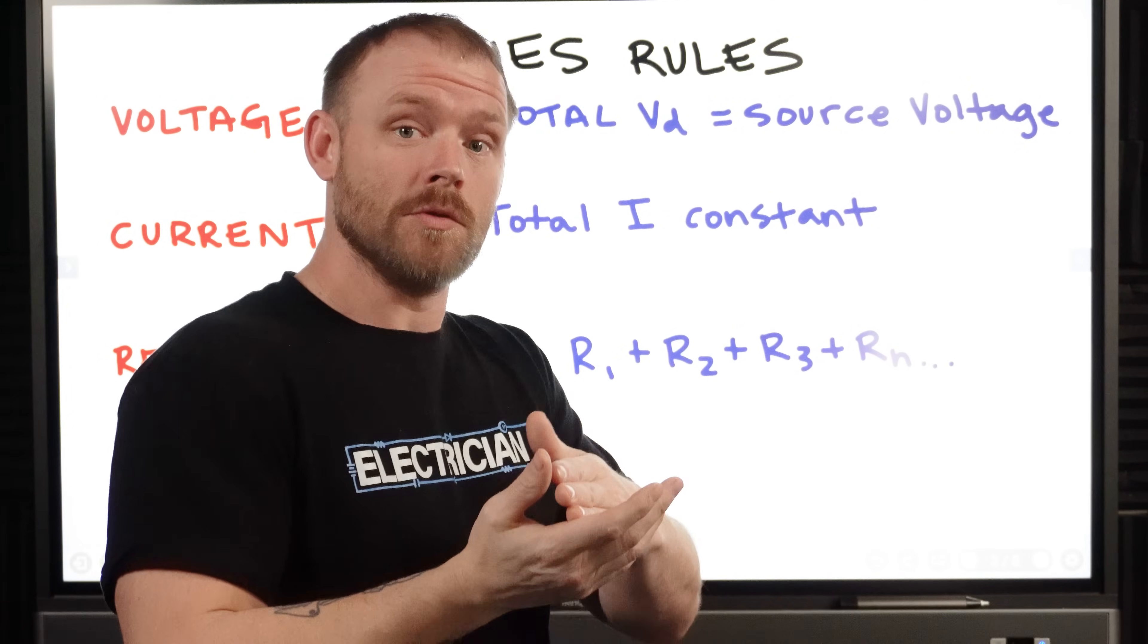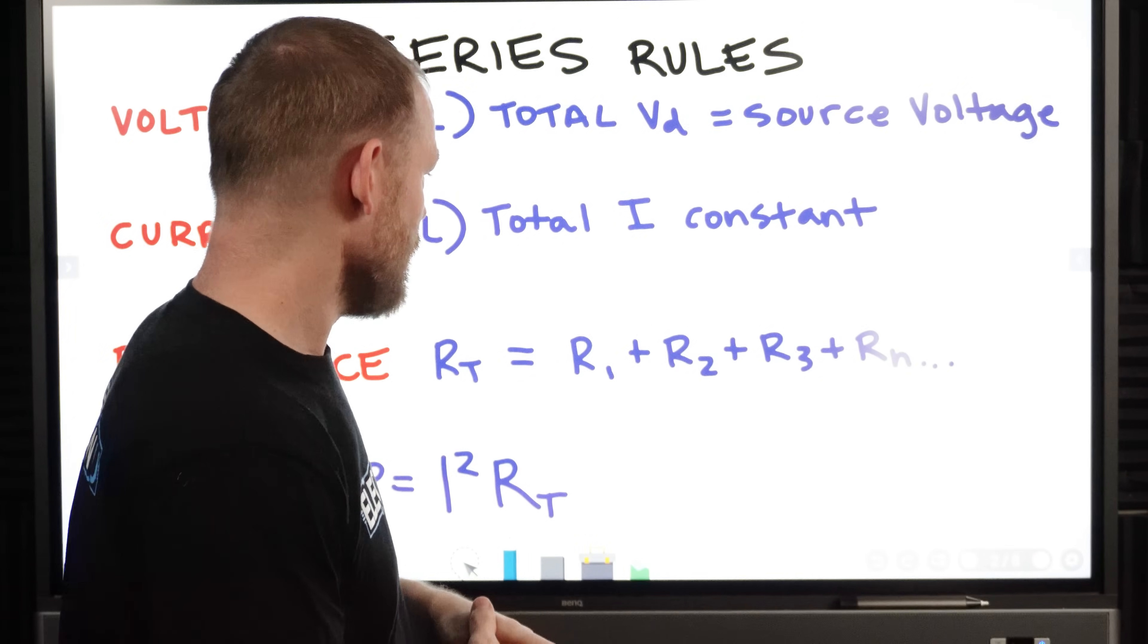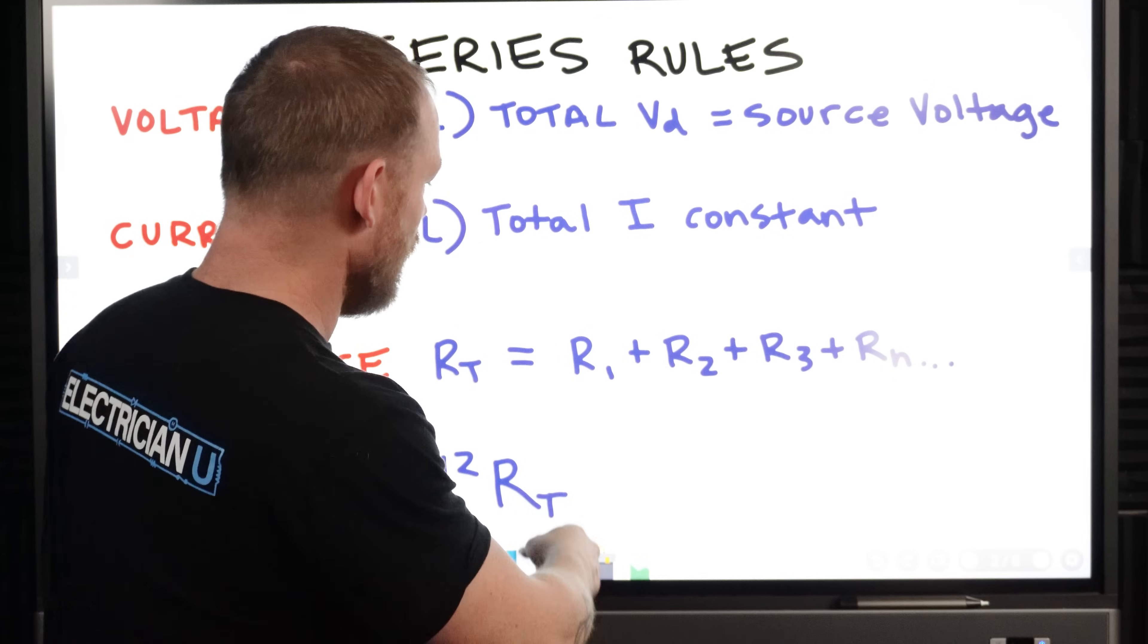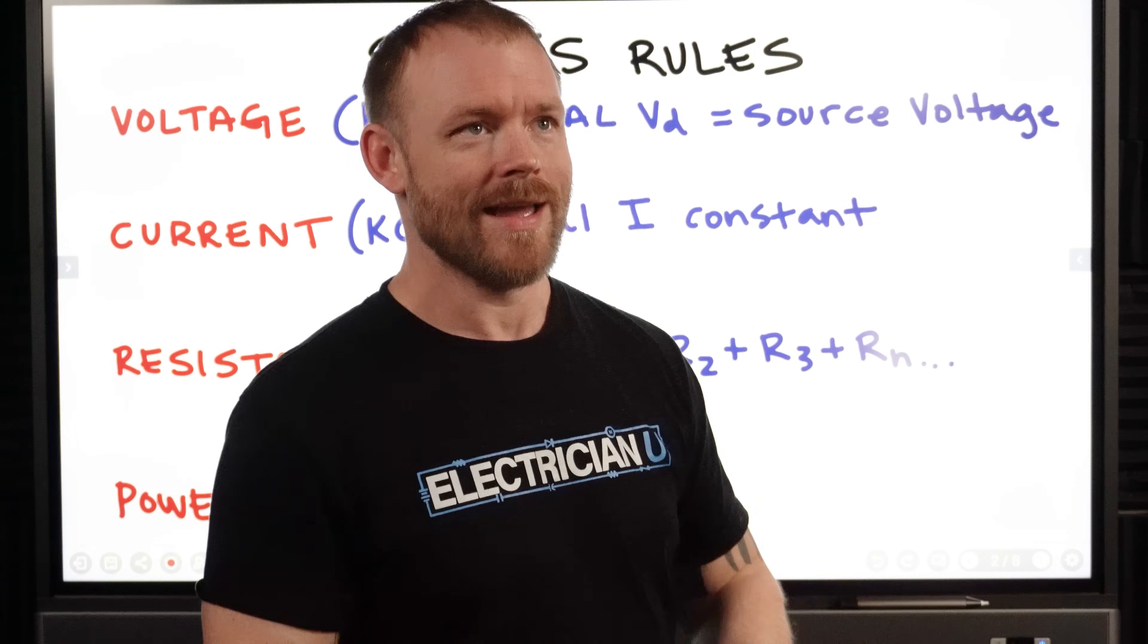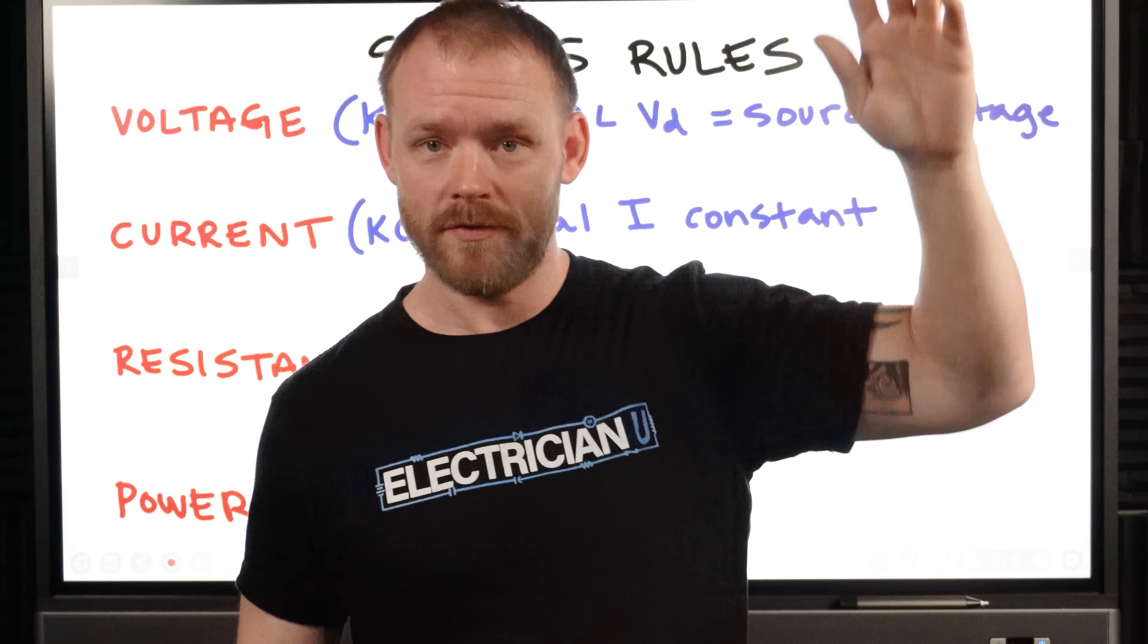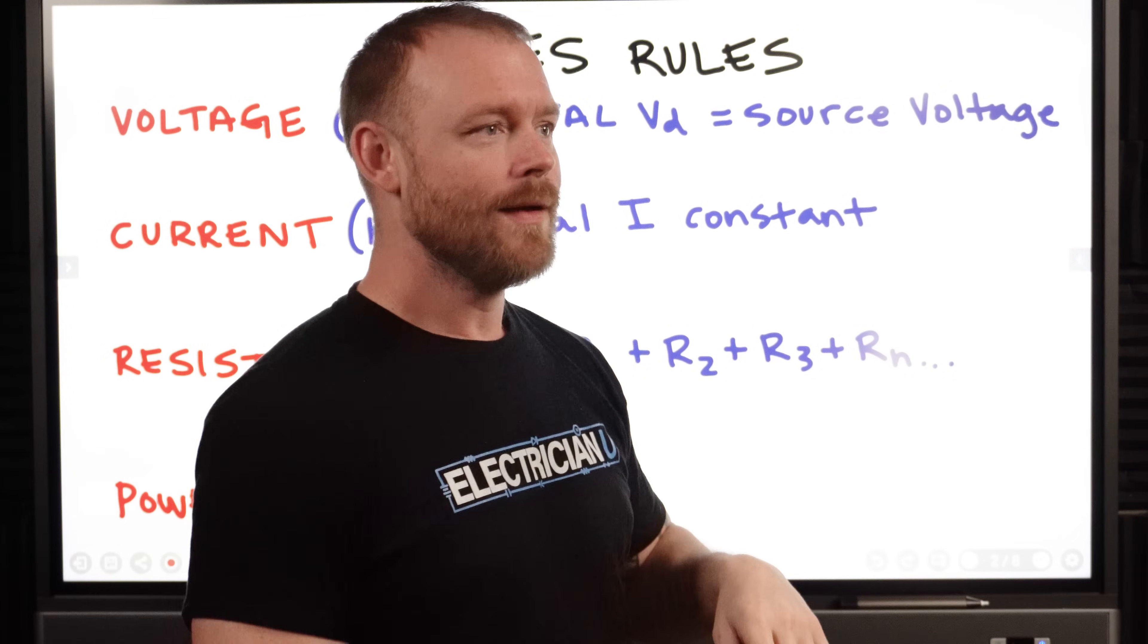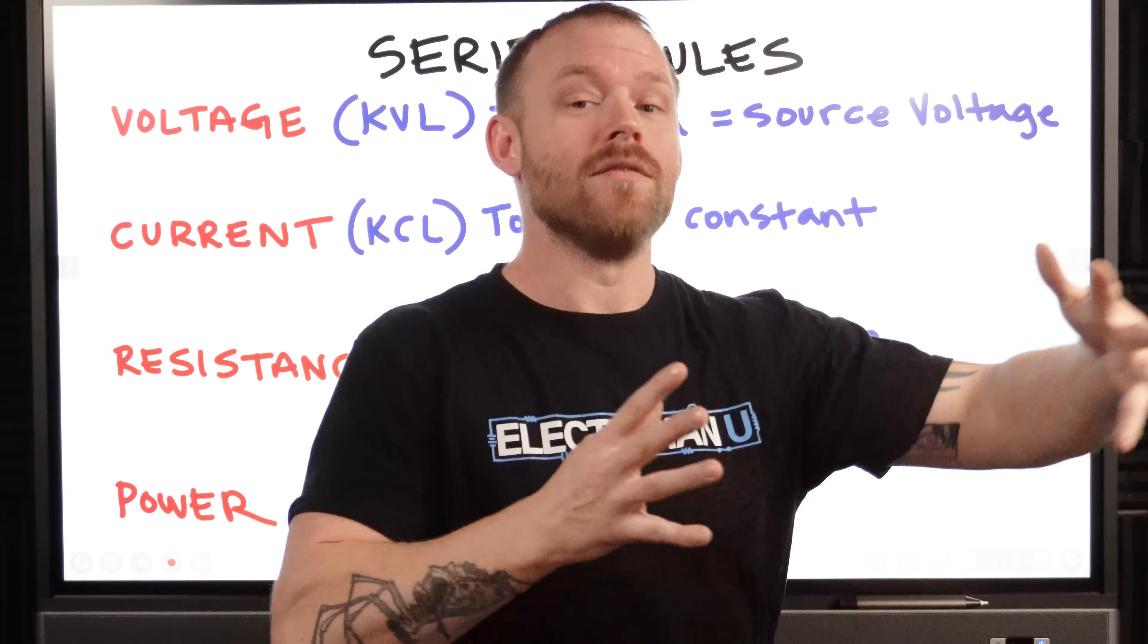And that is going to be able to be checked by the current that we just said should be a constant. So the formula for that is RT or R total is equal to resistance one, resistance two, resistance three, and resistance N, which just means whatever number of resistances. You could go one through like a hundred if you have a hundred resistors in the circuit. So anytime you see like RN or IN, that just means any number, like all of them, however many there are.